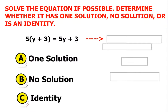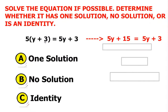Think about what you would do first. If you need a hint, use the distributive property. When you do that, you're going to distribute the 5 to the y as well as the 3. So 5 times y is 5y, and 5 times 3 is 15.